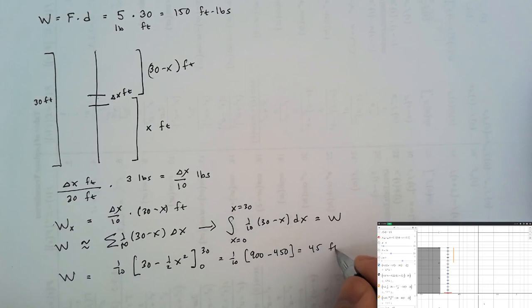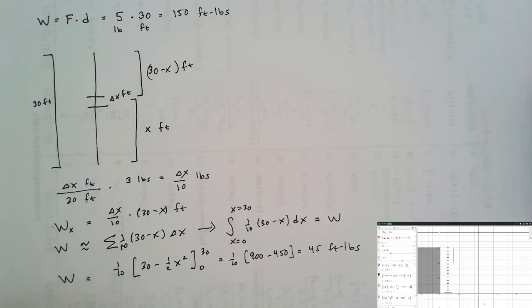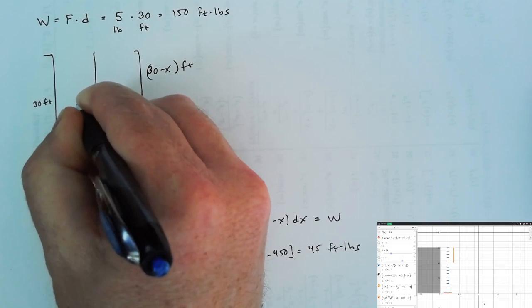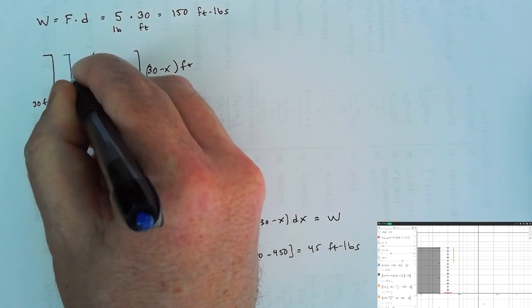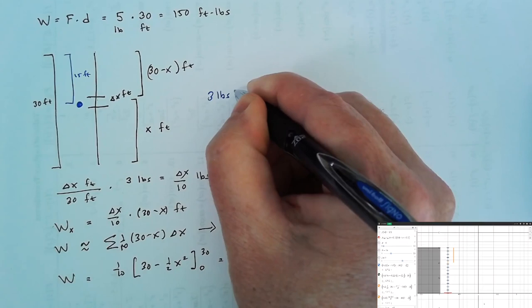It turns out there's a simpler way to compute this work. We could pretend that all of the rope is at its average height, which would be 15 feet from the top of the building. And we could take the 3 pounds the rope weighs times the 15 feet, and we could also get 45 foot-pounds.